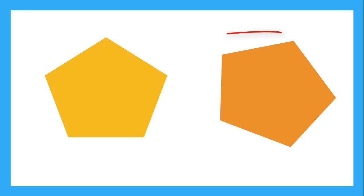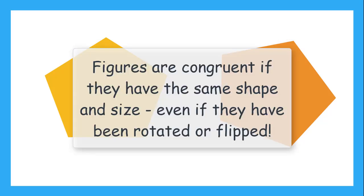And these two pentagons are congruent. We've just taken the orange pentagon and rotated it a little to the right. Shapes are congruent if they have the same shape and size, even if they've been rotated, flipped, or turned upside down.